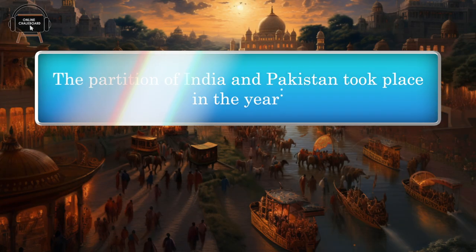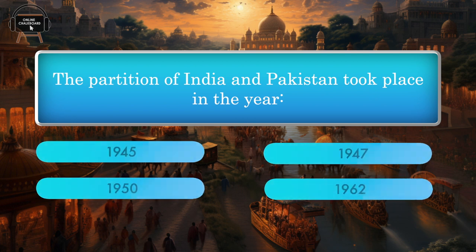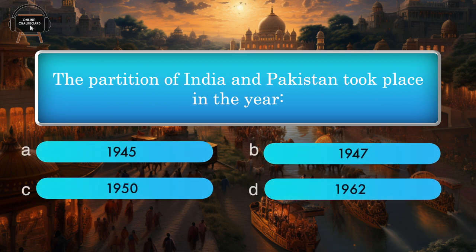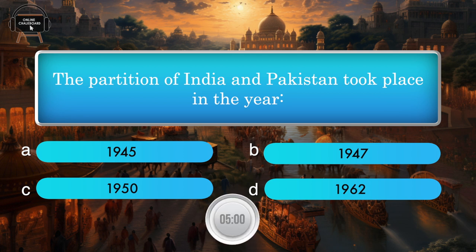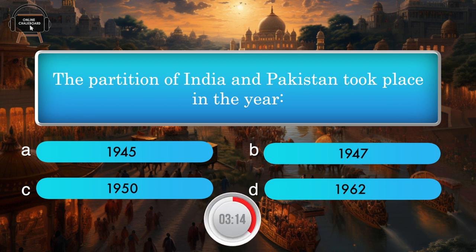The partition of India and Pakistan took place in the year — 1945, 1947, 1950, 1962. Answer: 1947.